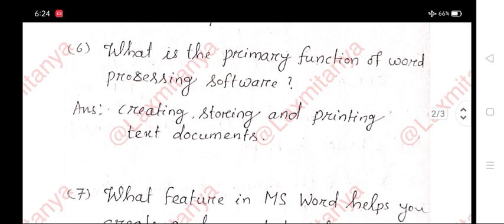Question 6: What is the primary function of word processing software? Answer: Creating, storing, and printing text documents.